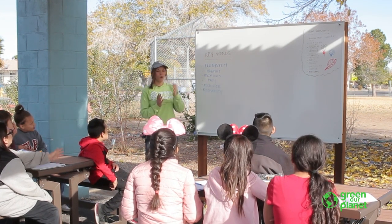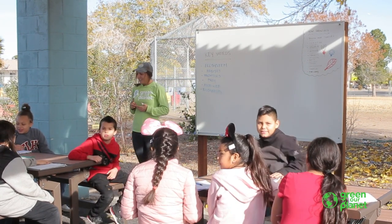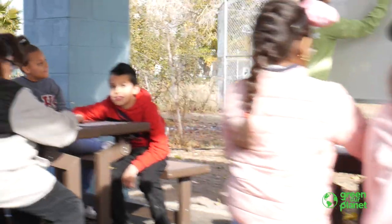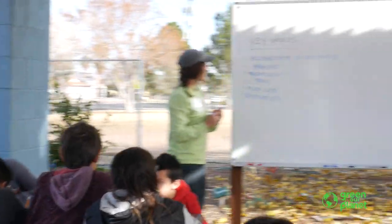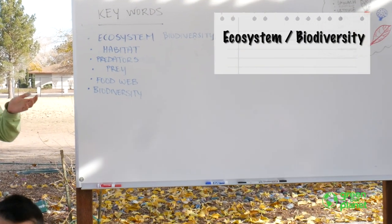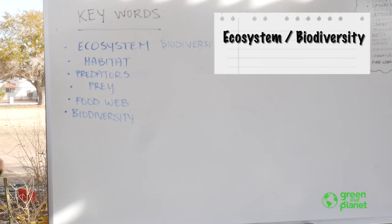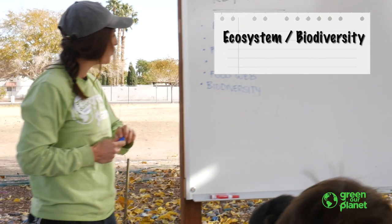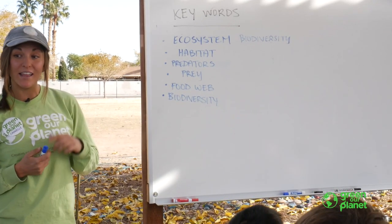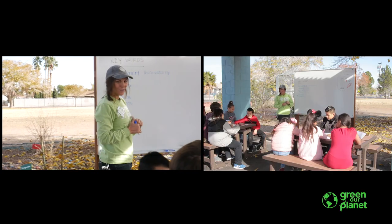I want everybody to open up their notebooks to the first page. And I want you to write 'ecosystem biodiversity.' We are going to either learn or review a lot of words today — a lot of keywords. I wrote our keywords here on the board. But first, I want to see if anyone can, in their own words, explain what an ecosystem is. What is an ecosystem?